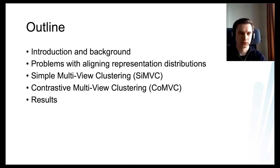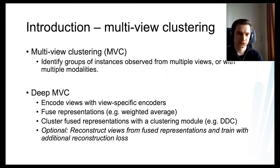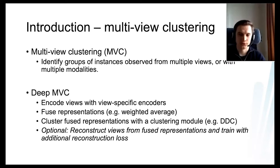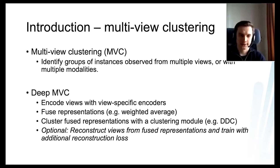Multi-view clustering is what it sounds like: you have instances or objects that are observed through multiple views, multiple modalities, or multiple sensors. For instance, if you have videos, one sensor gives you a sequence of images and another gives you audio — so that's a two-view data type. Deep multi-view clustering is basically how you do multi-view clustering using deep learning.